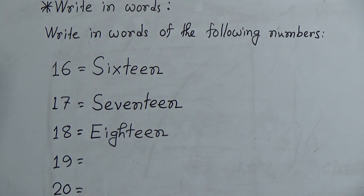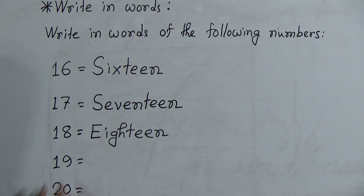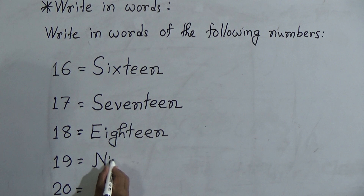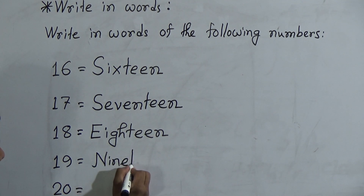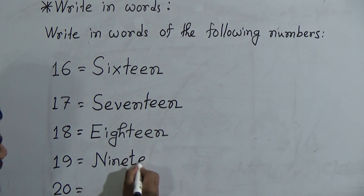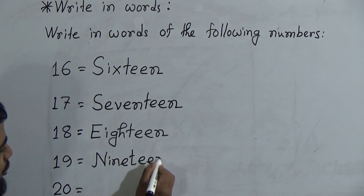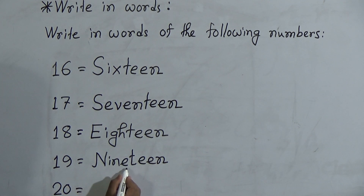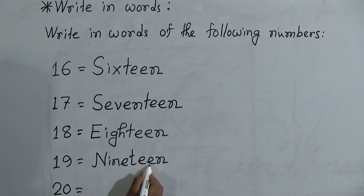The next number is 1 and 9, which makes the number 19. The spelling of 19 is N-I-N-E-T-E-E-N, 19. Or you can say N-I-N-E-T-E-E-N, 19.